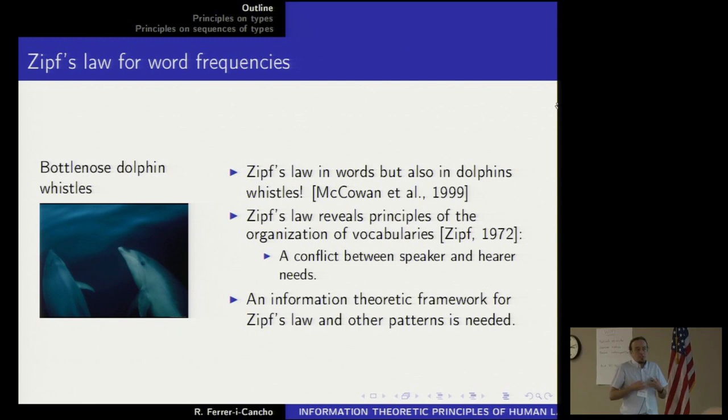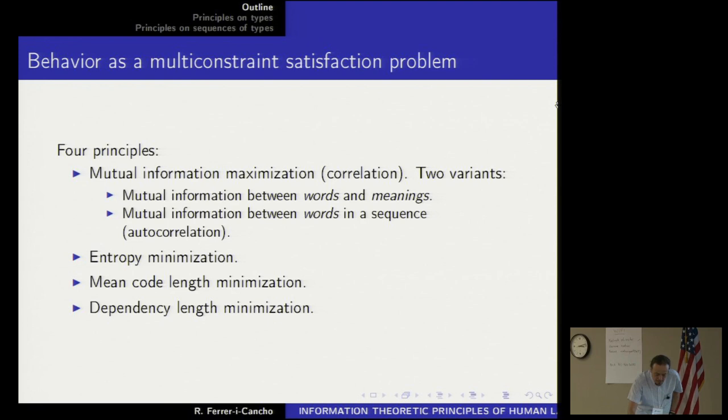One of the goals of my talk is showing that the utility of information theory goes beyond just having an additional way of measuring things or just another predictive metric. Indeed, we can think of information theory as providing us an ensemble of principles that can help us understand how evolution, either biological or cultural, is constraining systems in a way that makes them reproduce the same pattern in different species.